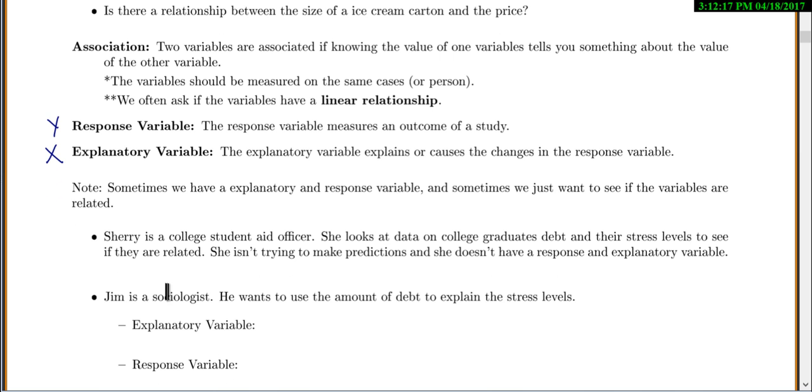But Jim is a sociologist. He wants to use the amount of debt to explain the stress levels. So the explanatory variable, what he uses to explain it would be the amount of debt. And the response variable, what he's actually trying to explain, would be the stress levels.